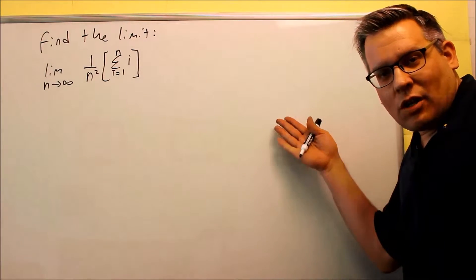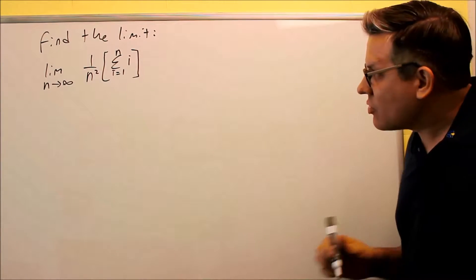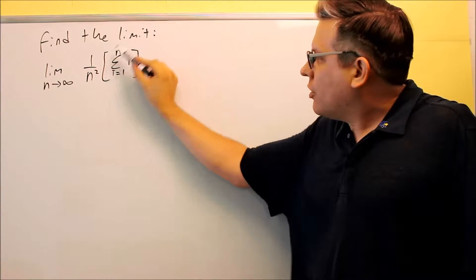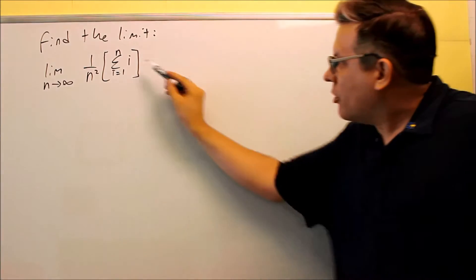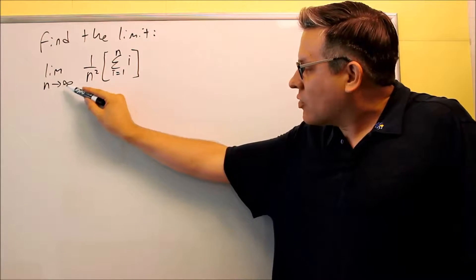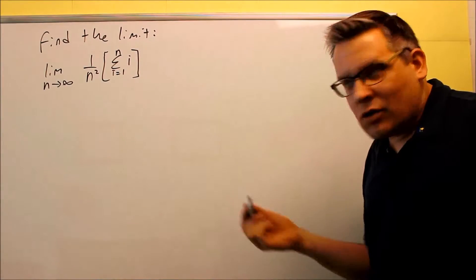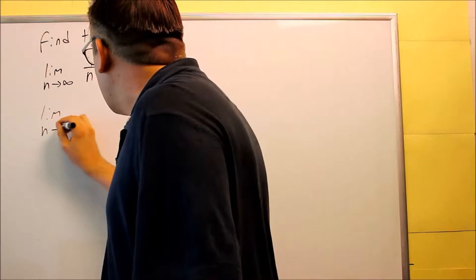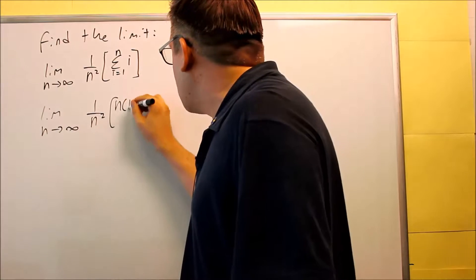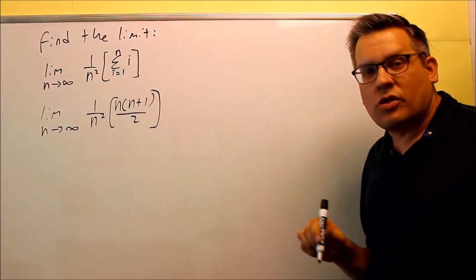In this video, we're going to take a look at limits again, and we're going to be combining limits with the summation notation we've already been talking about. What we have to do first is put in the special summation formula, because our limit is going to n, n goes to infinity, and we want to turn that into something that has n's in it so that way we can calculate the limit. So we'll put in the formula: n times n plus 1 over 2.